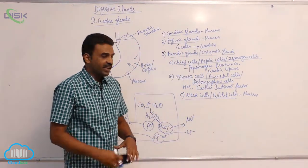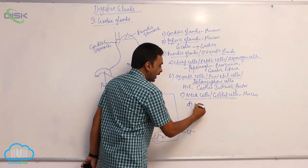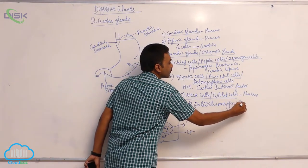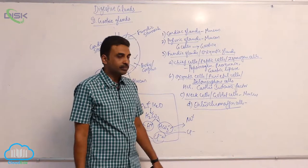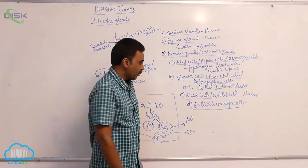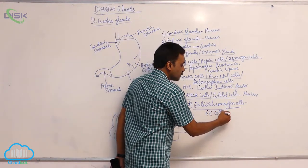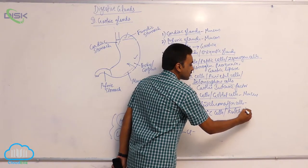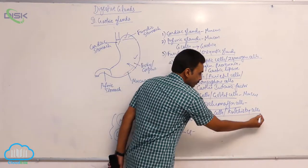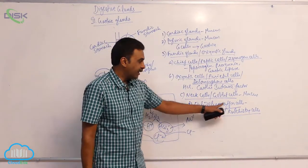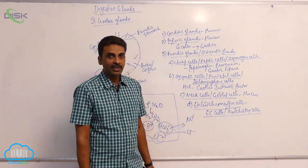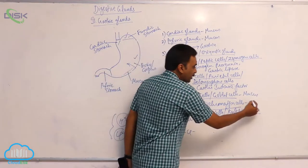Apart from these three cell types, there are also enterochromaffin cells, also called EC cells or Kulchitsky cells.